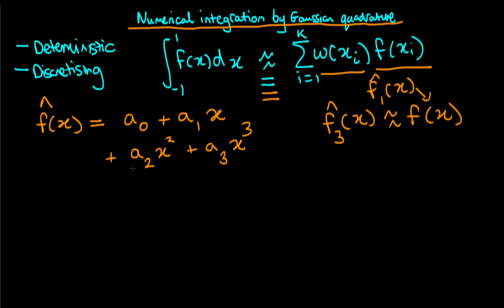A cubic polynomial may still not be a very good approximation to our function, so we might include higher order terms like x to the 4 and x to the 5. We then find exact x values and weights to ensure equality for all polynomials up to order 5, getting an even better approximation to the integral. The idea is we approximate our function by a polynomial of ever increasing order, finding exact x values and weights for a given polynomial order to work out the integral.